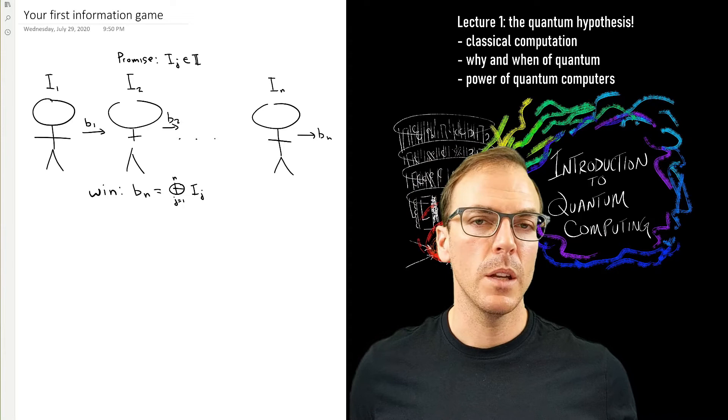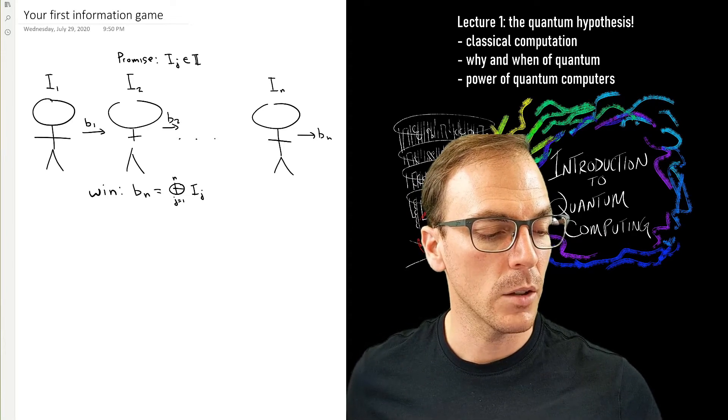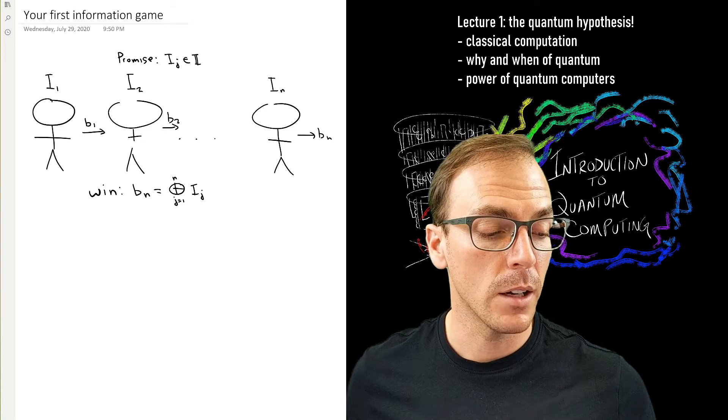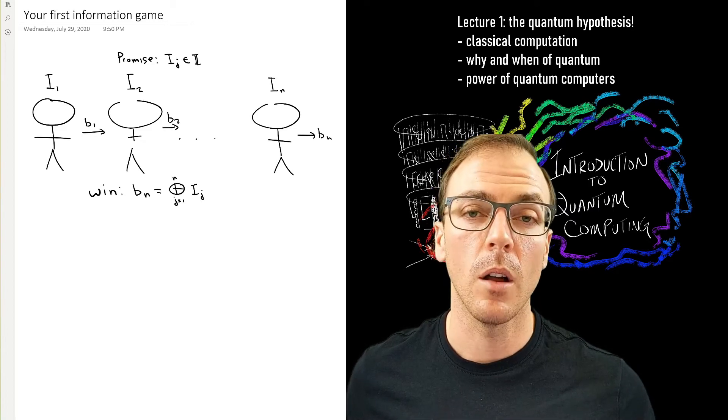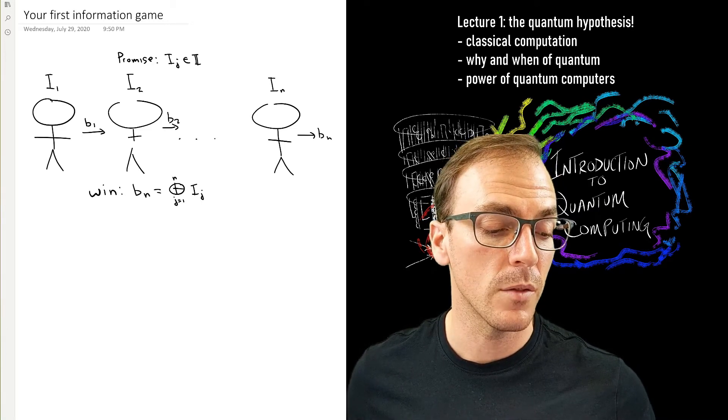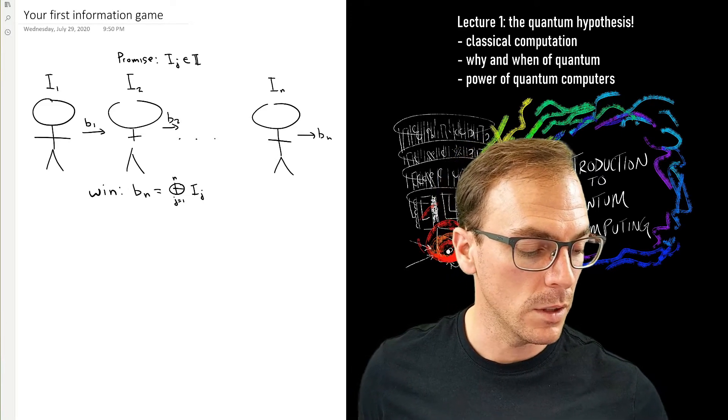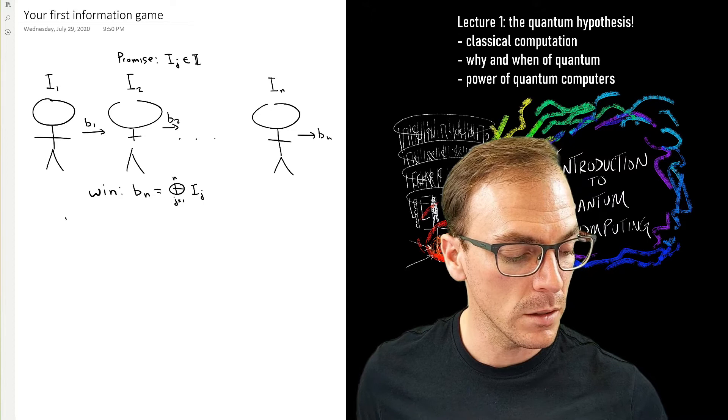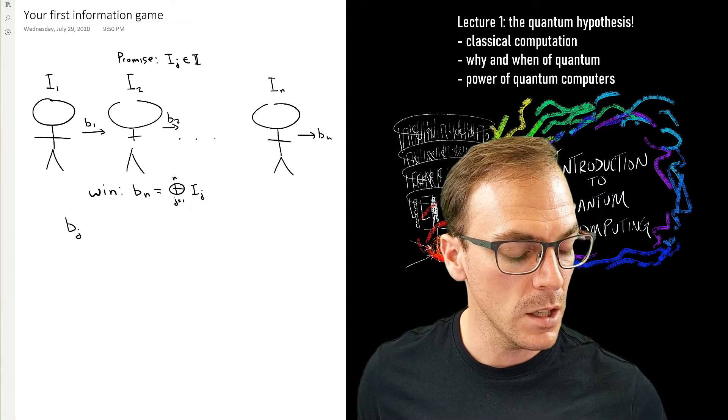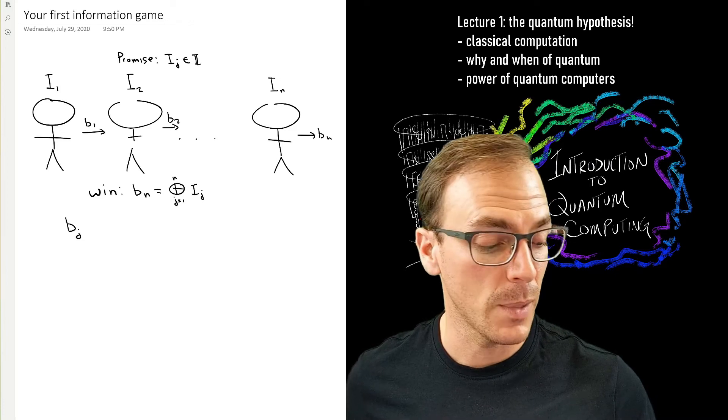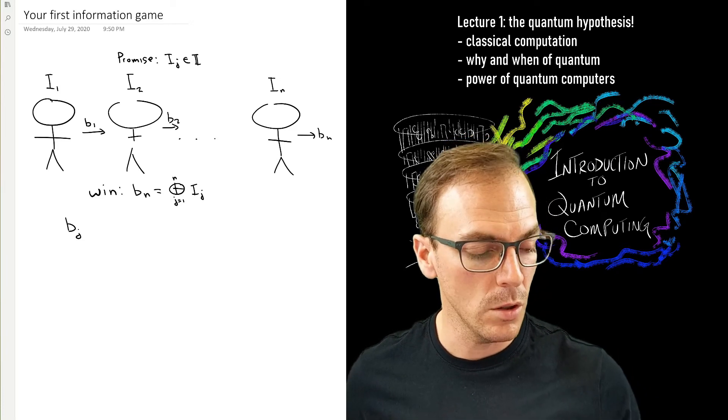Now they win the game if that last player gives the parity of all of the bits that they were given. So this seems like it might be difficult, right? If I'm the last player, how could I know anything about what all of the other players have seen if the player before me can only give me one bit?